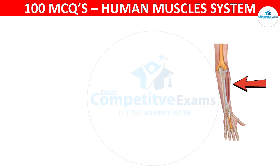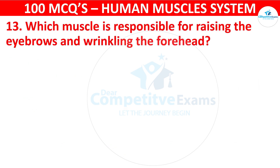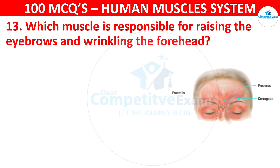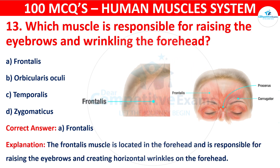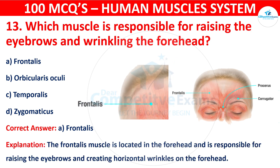Question number thirteen: Which muscle is responsible for raising the eyebrows and wrinkling the forehead? Your options are: Frontalis, Orbicularis oculi, Temporalis, or Zygomaticus. The correct answer is A, that is frontalis. The frontalis muscle is located in the forehead and is responsible for raising the eyebrows and creating horizontal wrinkles on the forehead.